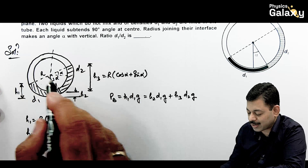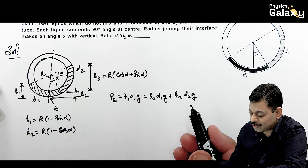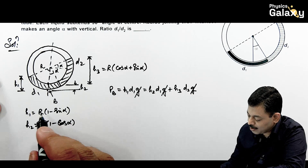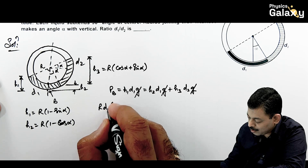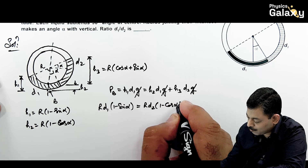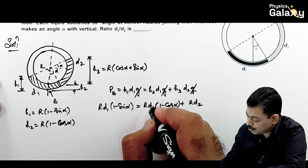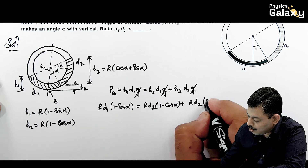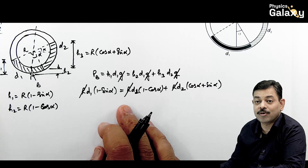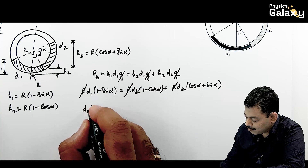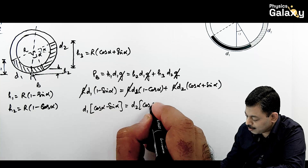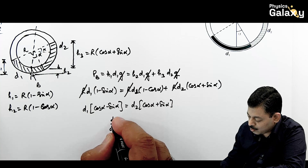Atmospheric pressure and g cancel out. Substituting: R·d1·(1 - sin α) = R·d1·(1 - cos α) + R·d2·(cos α + sin α). After cancelling R, rearranging gives d1·(cos α - sin α) = d2·(cos α + sin α), so d1/d2 = (cos α + sin α)/(cos α - sin α).